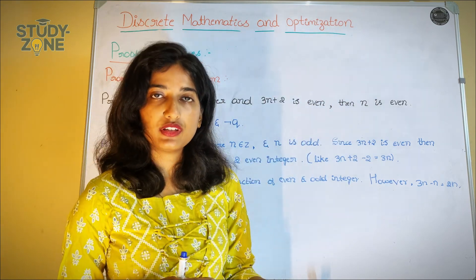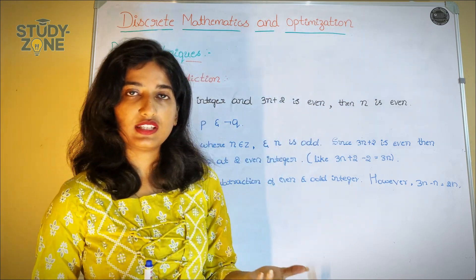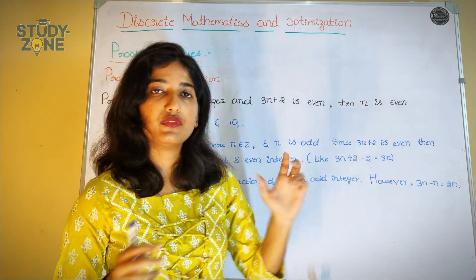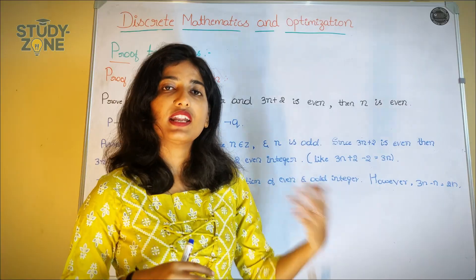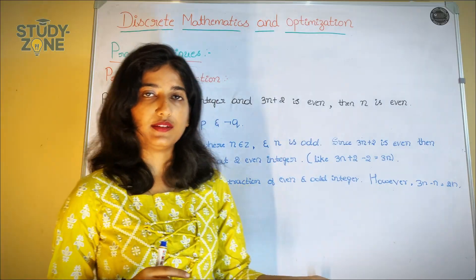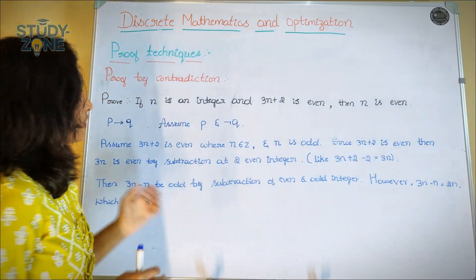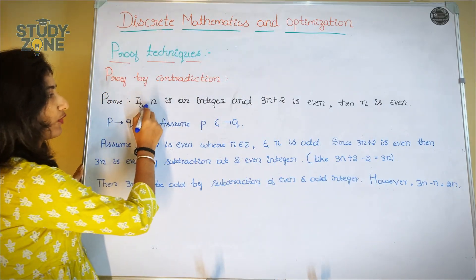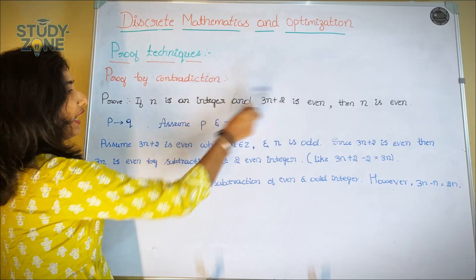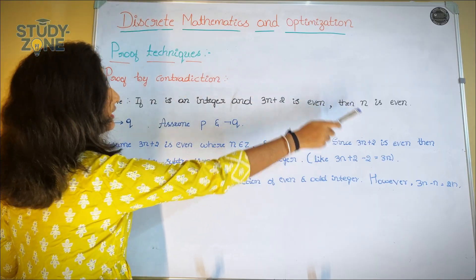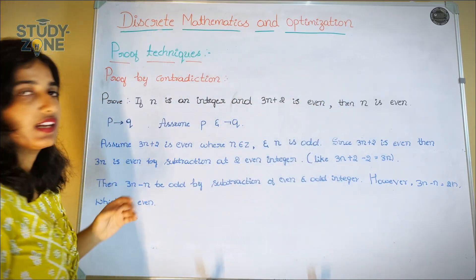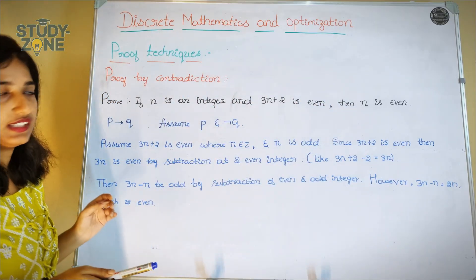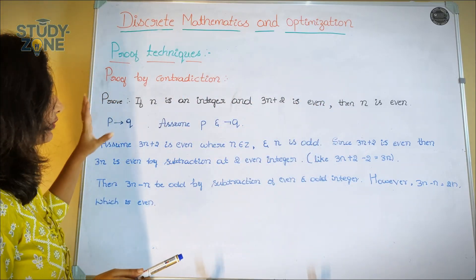So in proof by contradiction, what are we taking? We are taking one term and the negation of another term. Here the statement is in the form of if-then.